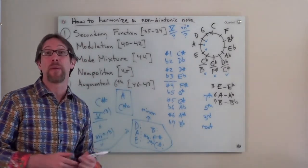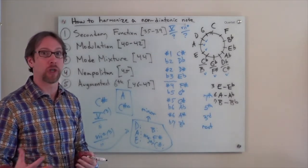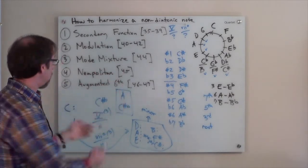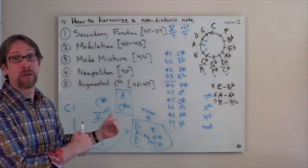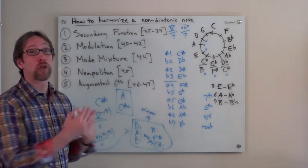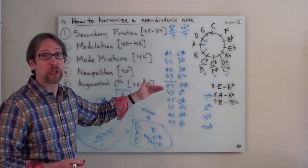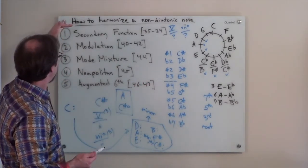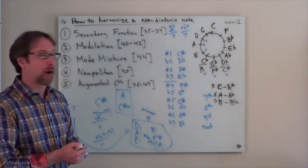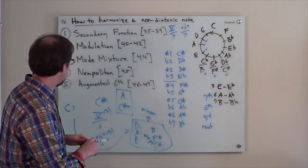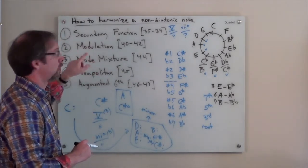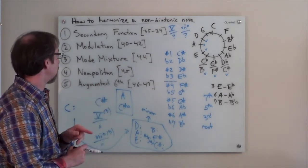I know those notes now become available to me by using mode mixture. So as I'm going through this step-by-step process for the note C sharp in the key of C, which is sharp one, some things are going to work, some things are not. And that's going to change when I go to another pitch and its relationship within the key. That's why I laid out these five different areas where we derive chromatic harmonies from. So in the case of sharp one, we can use secondary functions, we can modulate, we cannot use mode mixture. That won't work.